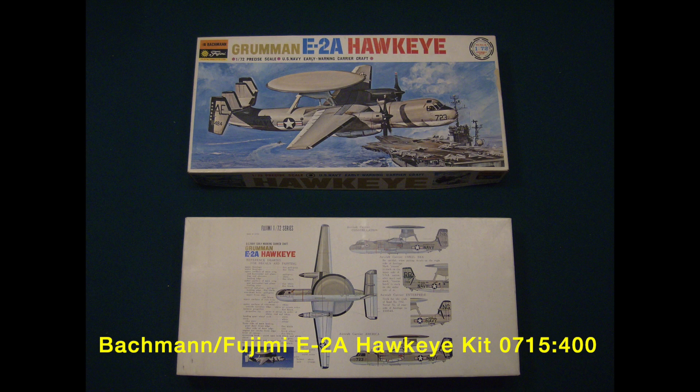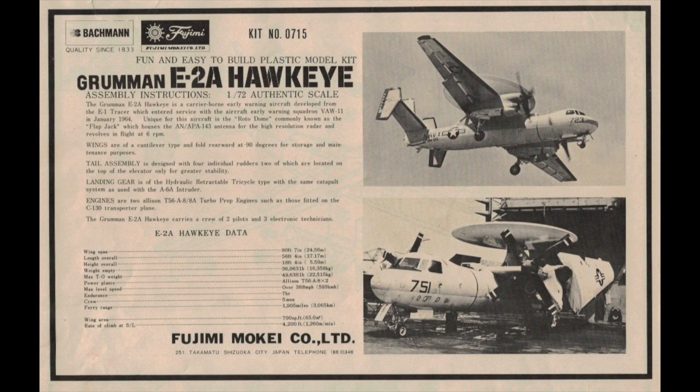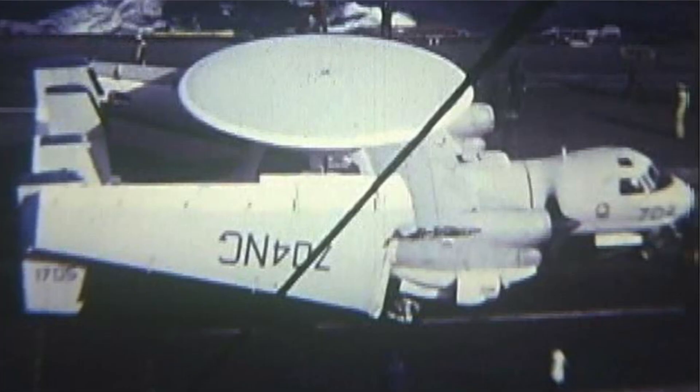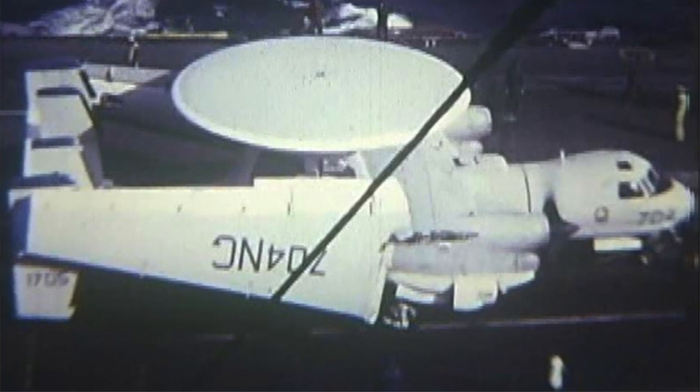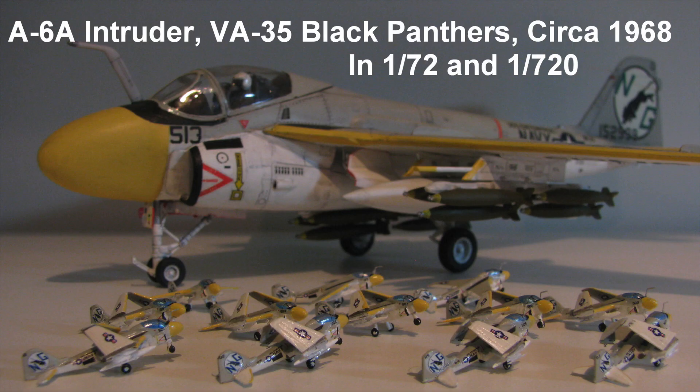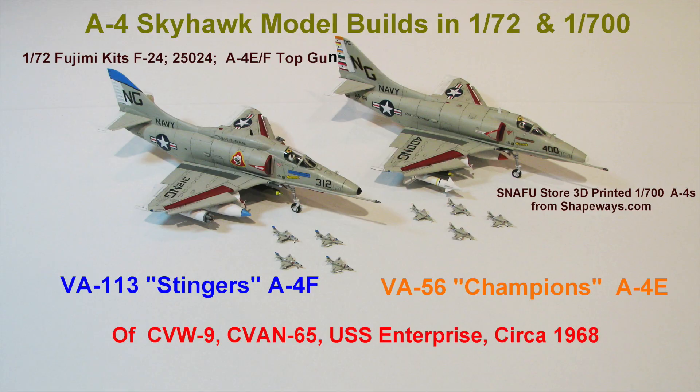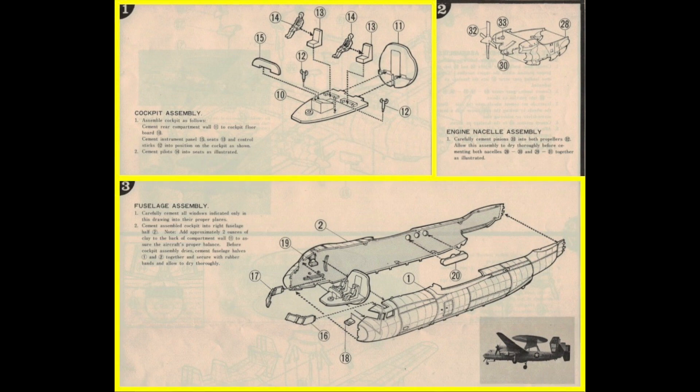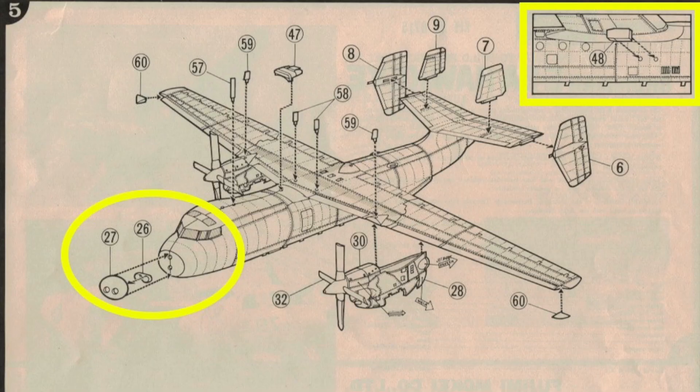This video is part two of my build of the E-2A Hawkeye of VAW-112 Golden Hawks in my 1968 USS Enterprise project. The ship in 1:720 and all the Carrier Air Wing 9 aircraft in 1:72. I'll basically complete the fuselage sub-assembly, more or less stages 1, 3, and parts of stage 5 in the instructions.